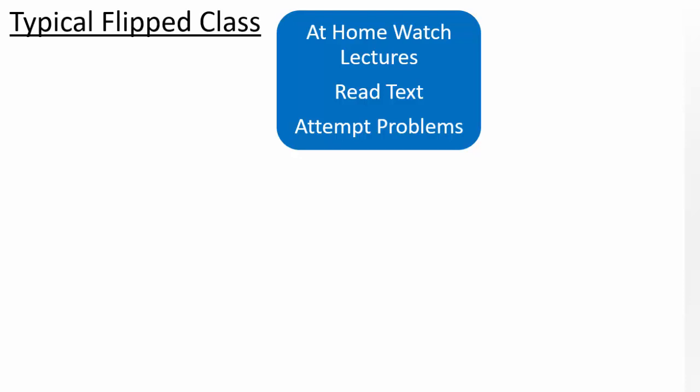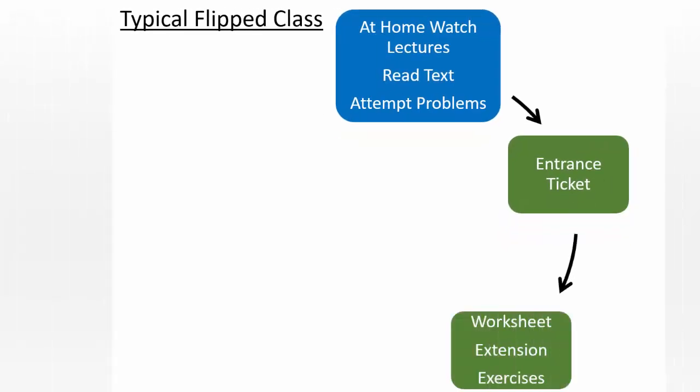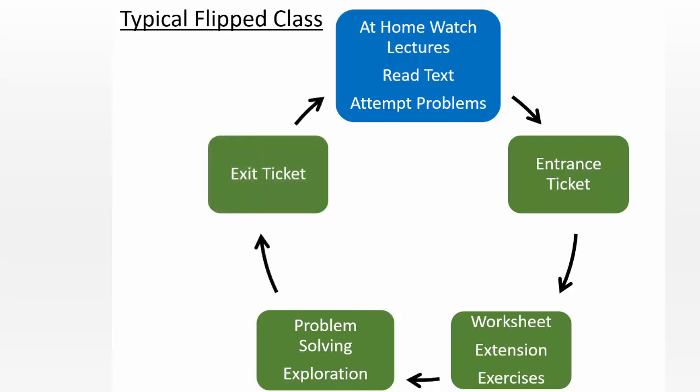So it's important to remember the classroom structure. At home, you are watching lectures, reading the textbook, attempting required problems. When you come to class, you will do an entrance ticket, which is basically a review of all the homework that you completed so the teacher knows where you're at. Then you will start working on worksheet extension, exercise questions, discussions that you had attempted prior to coming to class. Problem solving is what most classes are spent on along with some exploration of concepts like in the lab using computers or graphing utilities. And then before you leave class, you will fill out an exit ticket and you will tell the teacher the summary of what happened in the classroom along with what you still needed help on so the teacher can address it at the following class.